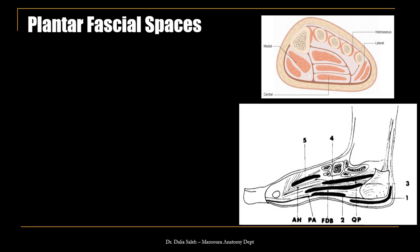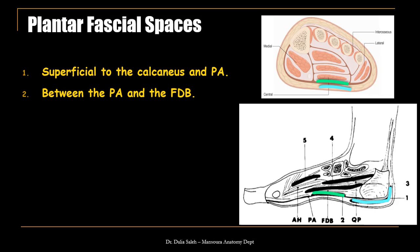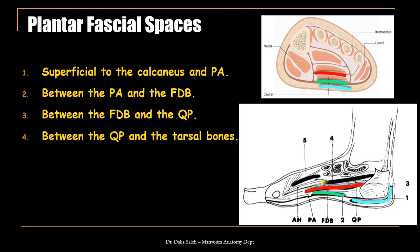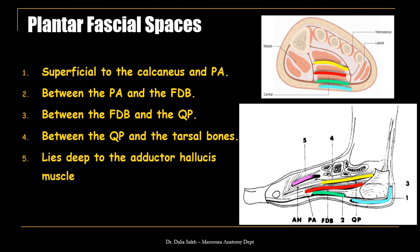The plantar fascial spaces are arranged from superficial to deep. The first space lies superficial to both the calcaneus and plantar aponeurosis. The second space lies between the plantar aponeurosis and flexor digitorum brevis, extending posteriorly to the calcaneus and anteriorly to the bases of the metatarsals. The third space lies between flexor digitorum brevis and quadratus plantae, extending posteriorly to the calcaneus and anteriorly to mid-metatarsal level. The fourth space lies between quadratus plantae and the tarsal bones. The fifth space lies deep to the adductor hallucis muscle.